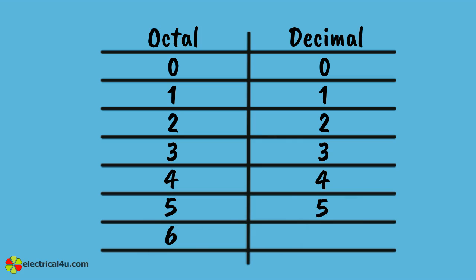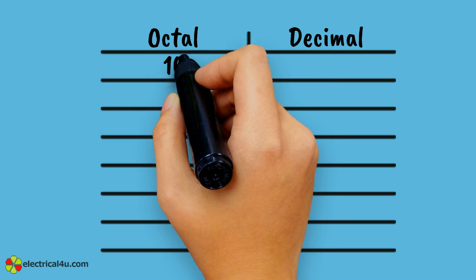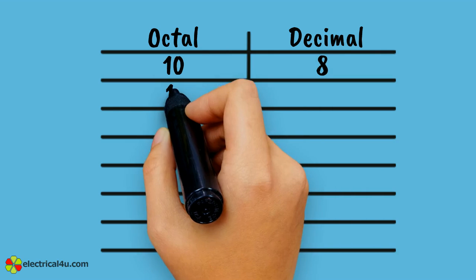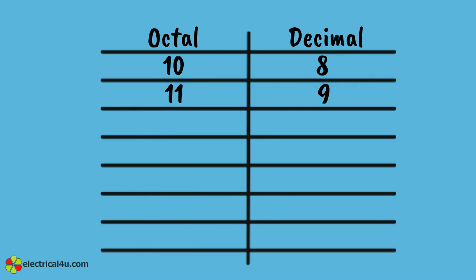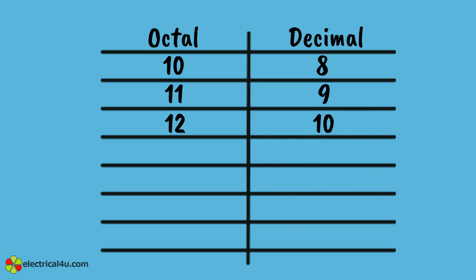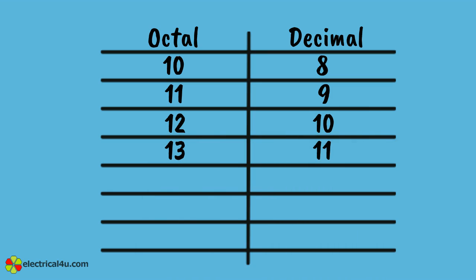Octal 6 is equivalent to decimal 6, octal 7 is equivalent to decimal 7. Octal 10 is equivalent to decimal 8, octal 11 is equivalent to decimal 9, octal 12 is equivalent to decimal 10, and octal 13 is equivalent to decimal 11.